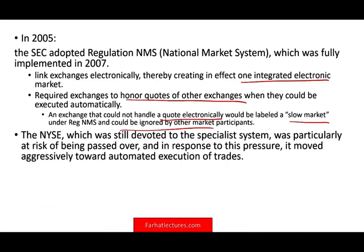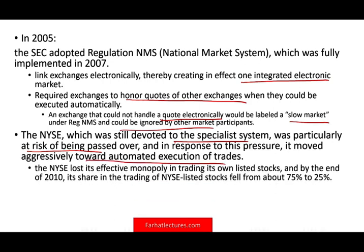The NYSE, which was still devoted to the specialist system, was at particular risk of being passed over because computers can execute at a faster pace and higher volume than a person. In response to this pressure, the NYSE moved aggressively toward automated execution of trades as well, and basically lost its effective monopoly in trading its only listed stocks. By the end of 2010, its share of trading fell from 75% to 25% of its own listed stocks, which are now traded electronically.